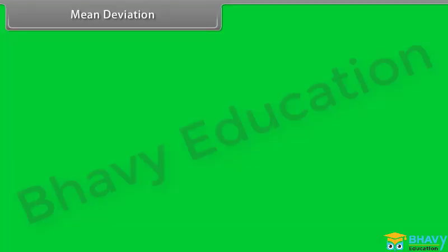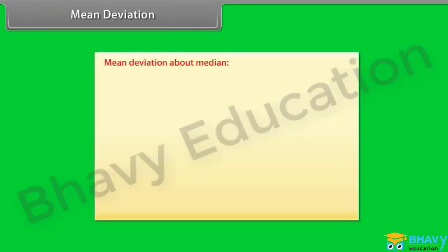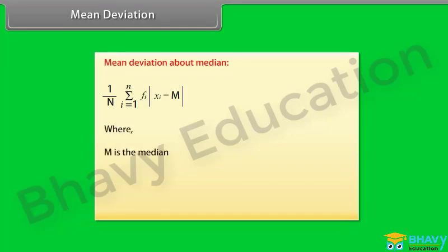Mean deviation about median. First we find the median. Then we find the mean of the absolute values of the deviations from the median. The mean deviation is found as summation from i=1 to n of fi·|xi minus m| divided by N, where m is the median, N is the sum of the frequencies.